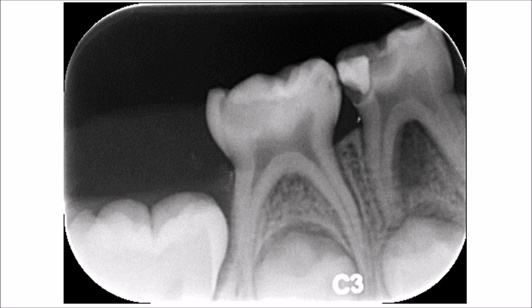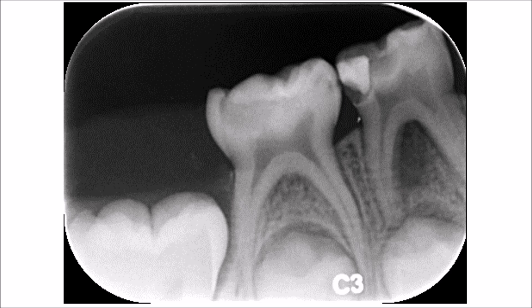On the same radiograph, on the first deciduous molar, you will see that there was an attempt to restore the tooth on the mesial surface, and the tooth has been affected by caries. Caries has affected the occlusal surface, showing the typical U-shaped appearance in the dentine. There is also a gingival recurrent caries located just underneath the filling.